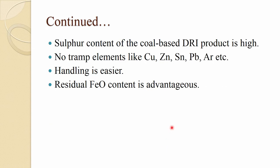Usually you get about 94 percent metallization or degree of metallization from most of these processes. Sulfur content, especially in coal-based DRI, is quite high because there is no slag to absorb it, so most of the sulfur content is retained. Tramp elements like copper, zinc, tin, lead, and arsenic are also present.